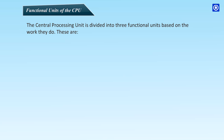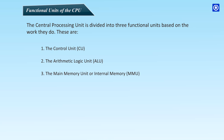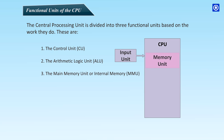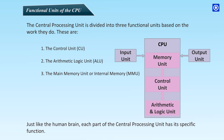The central processing unit is divided into three functional units based on the work they do. These are: the Control Unit (CU), the Arithmetic Logic Unit (ALU), and the Main Memory Unit or internal memory (MMU). The system also includes an input unit and output unit. Each part of the central processing unit has its specific function.